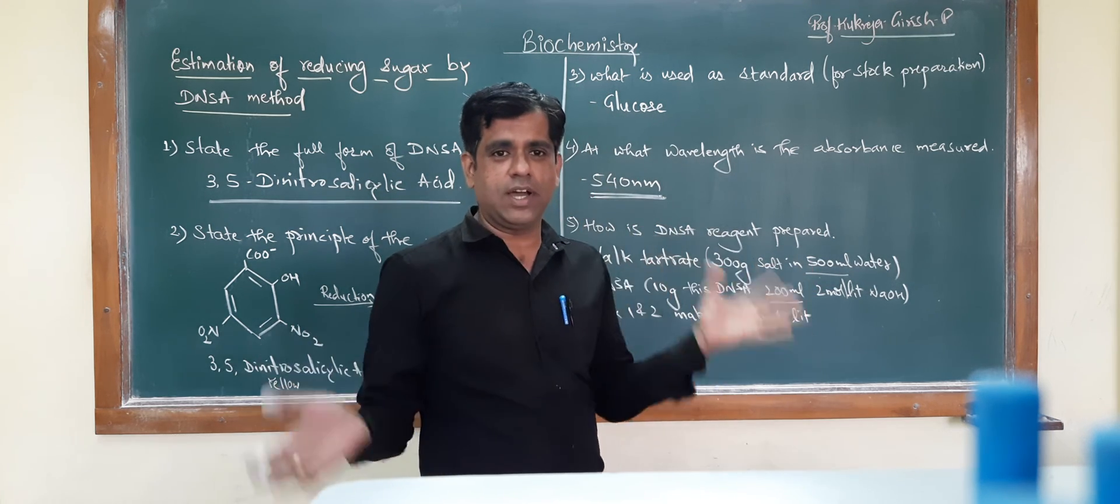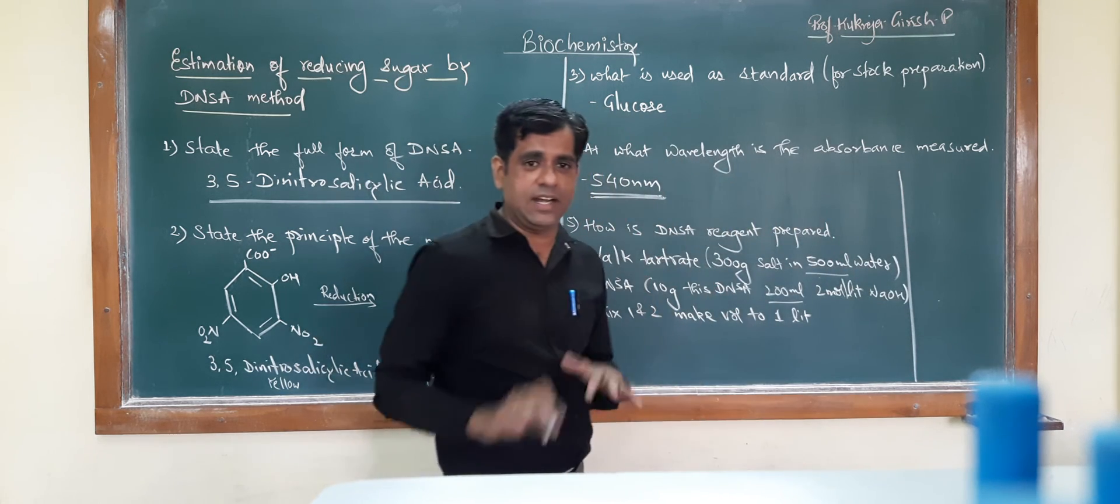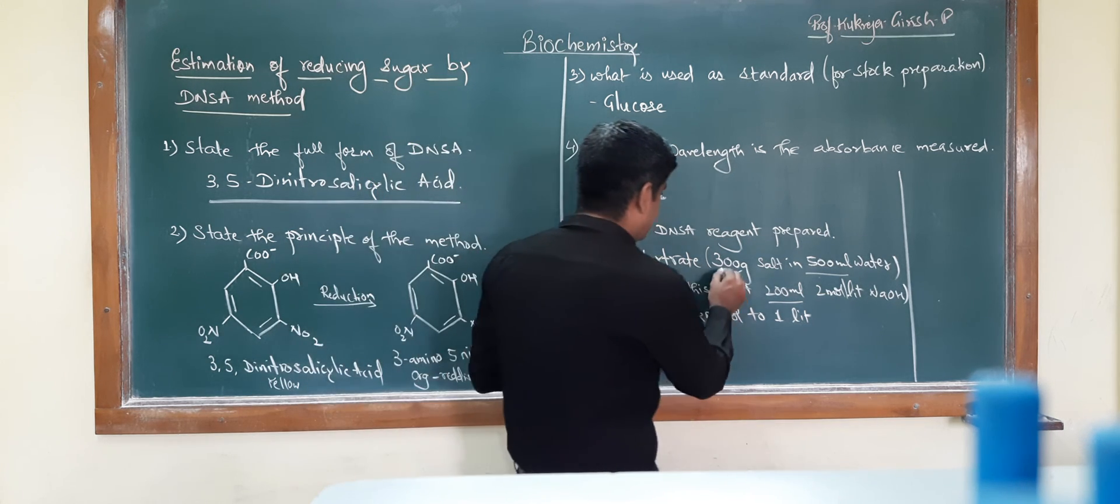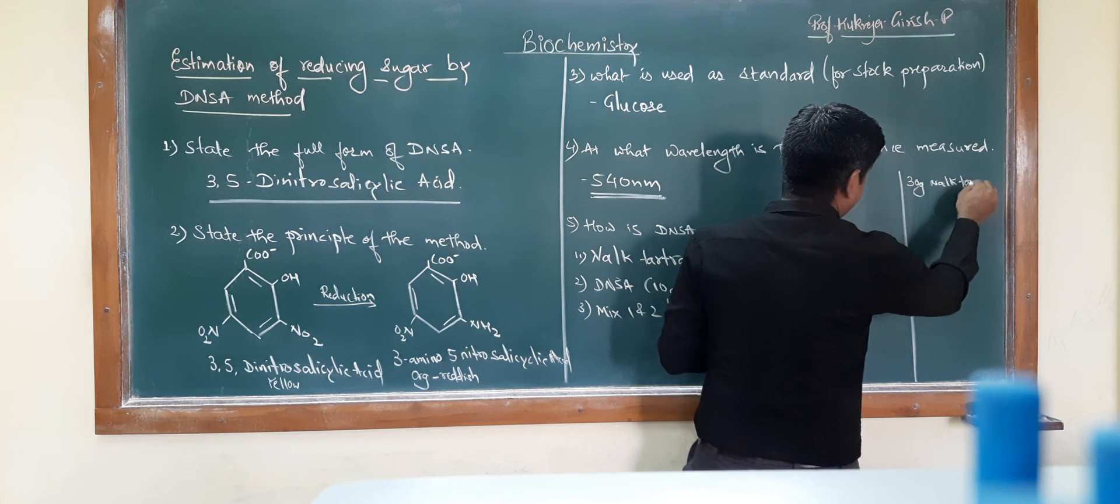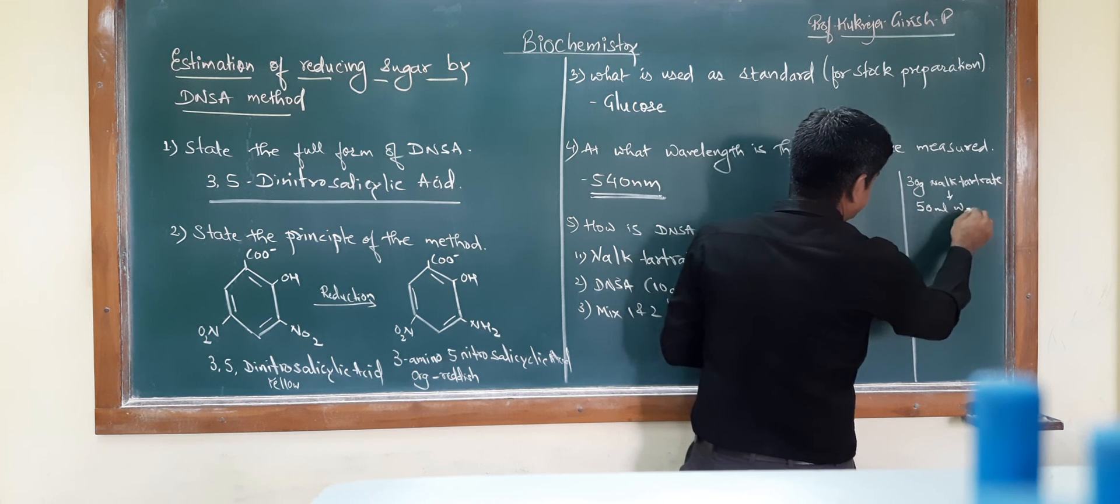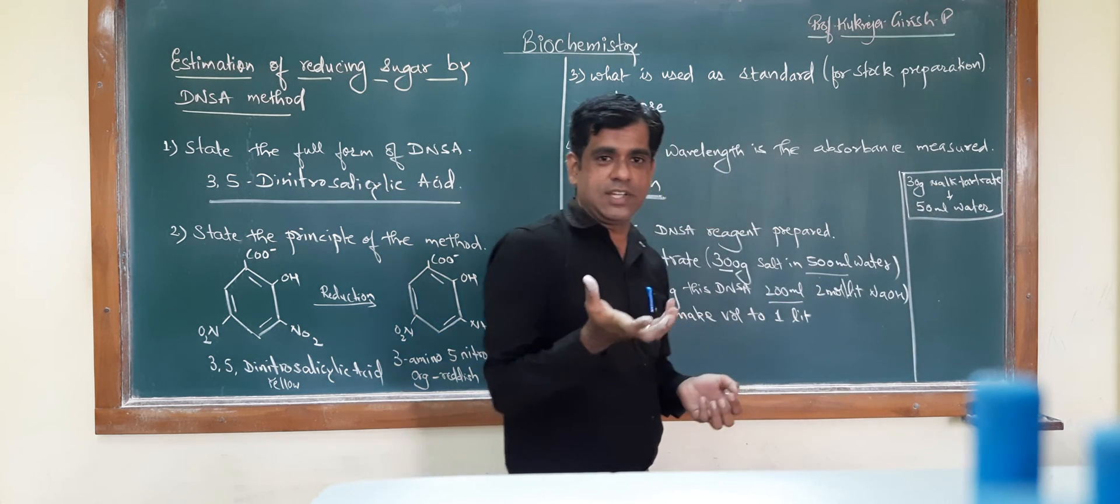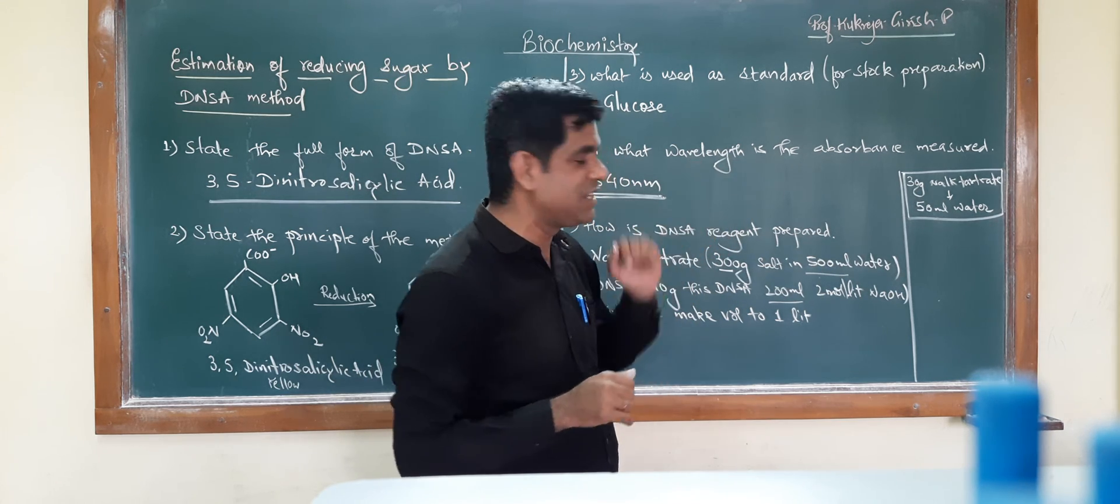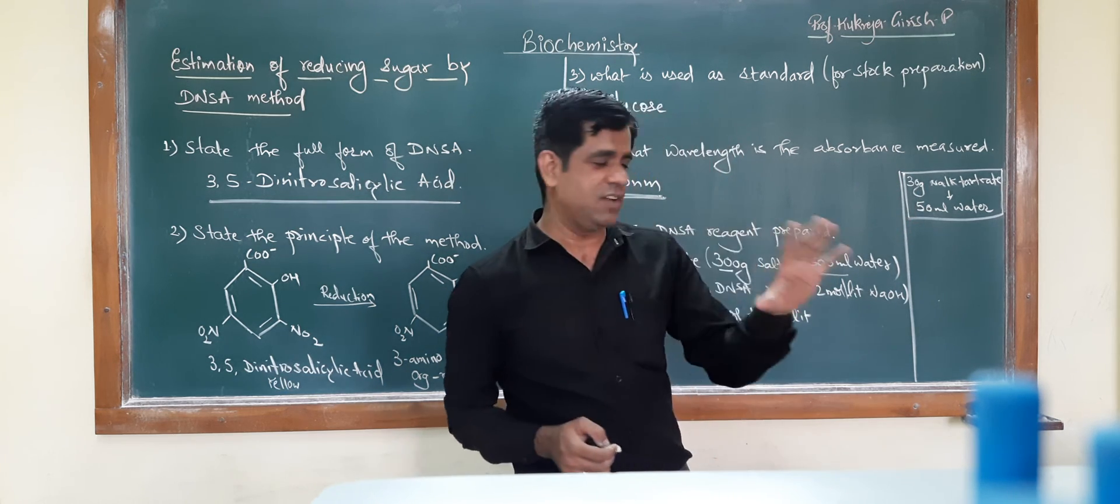For example, if you do not require 1 liter of solution, let us see how to prepare 100 ml. Obviously, we will reduce everything 10 times. So 300 grams I will reduce to 30 grams. I will take 30 grams of sodium potassium tartrate and dissolve this in 50 ml of water. This will be my first solution. When you weigh the salt, it is highly soluble and gets dissolved easily. So, 30 grams of salt in 50 ml of water in one beaker.